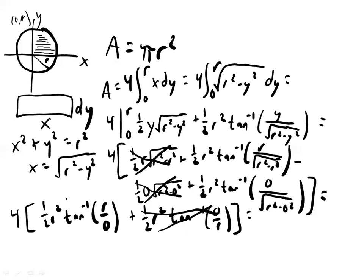But now the tangent of what equals infinity, essentially, undefined. And the first solution to that is pi over 2. And so you're going to end up with 4 times